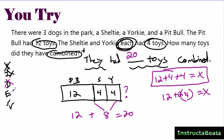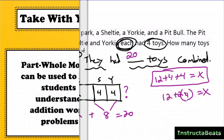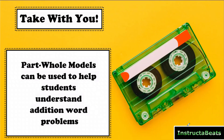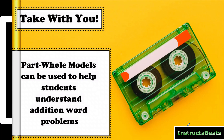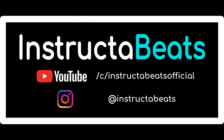Hopefully you solved it and got 20. Now you can see how the tape diagram helps students visualize what's happening. Check out our next lesson — we'll talk about when you have the whole but are missing one of the parts, which is a tricky type of question that the tape diagram makes really easy. Key takeaway: part-whole models help students understand addition word problems, not solve the arithmetic — they still need an addition strategy.